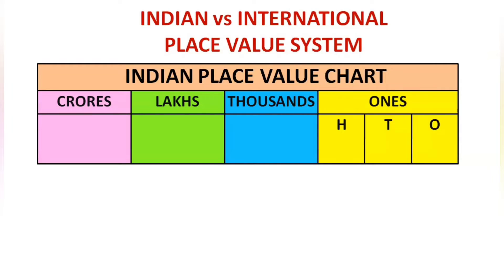The thousands period is divided into thousands and ten-thousands place. The lakhs period is divided into lakhs and ten-lakhs. Similarly, crores is divided into crores and ten-crores.